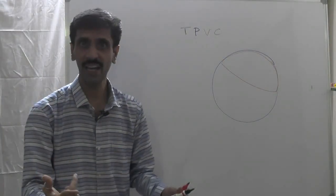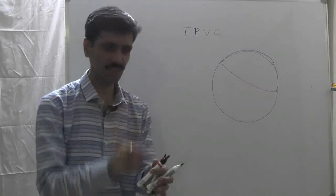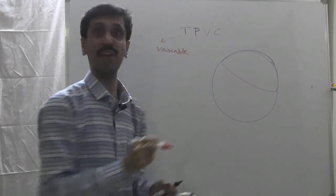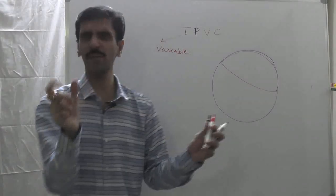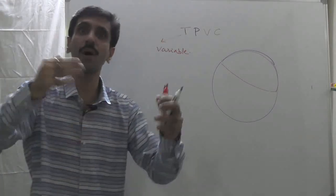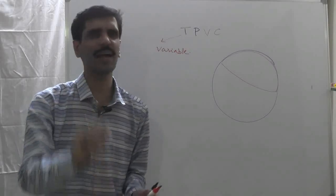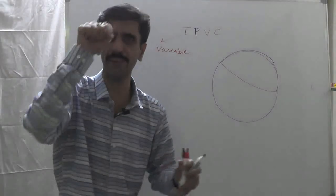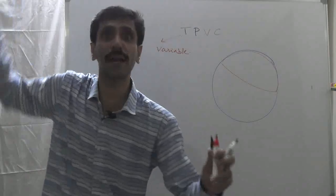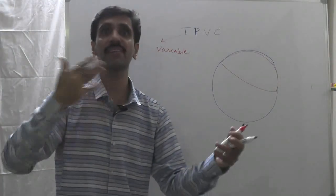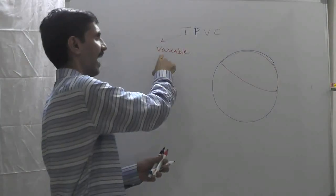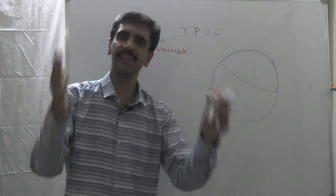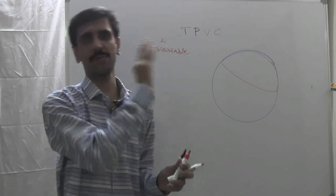Now I give two names to these properties. The first name is: I call these as variable properties. Why variable? Because these are the ones which are going to change with time — temperature, pressure, volume, concentration, etc. These properties have values and these values can change with time, and that's why the name is variable.